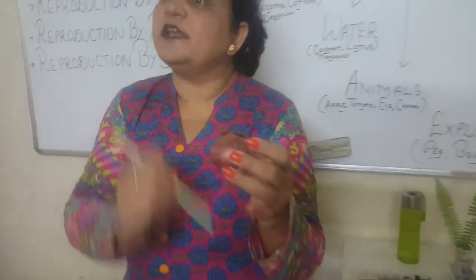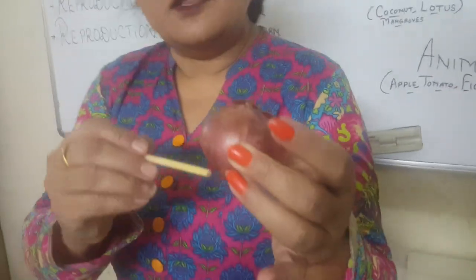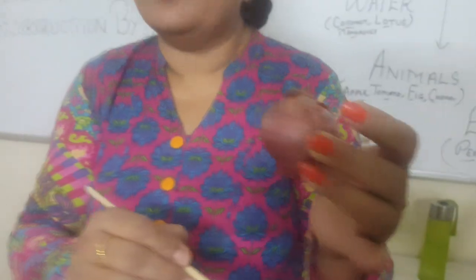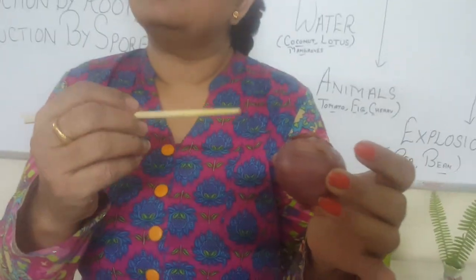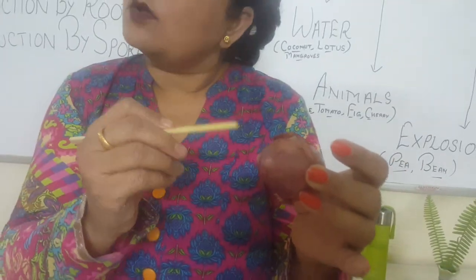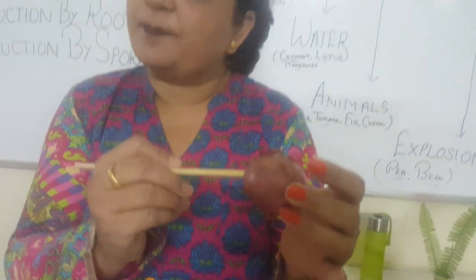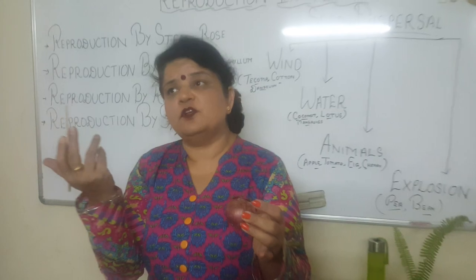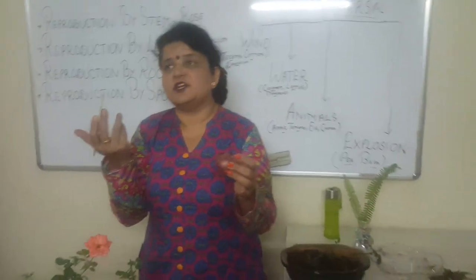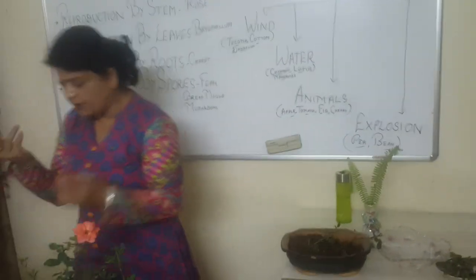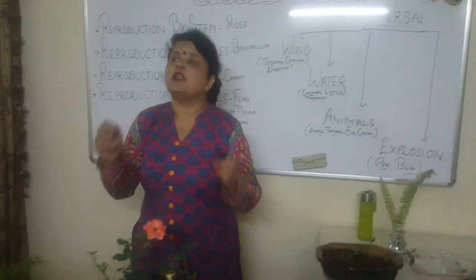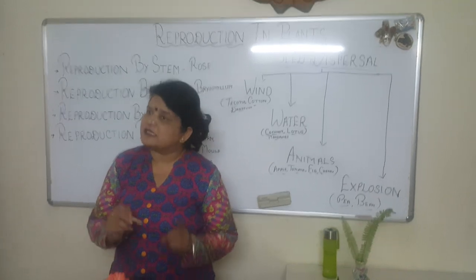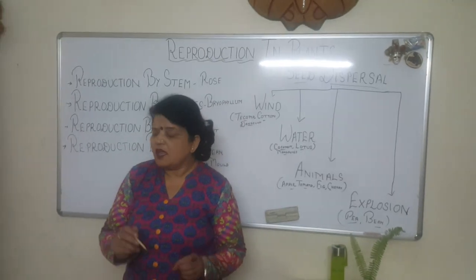The same is done with onion. If you put an onion in water, several roots will arise from it. An onion is also the stem of a plant, and you'll find the root and shoot growing out of it. This is all about reproduction by stem cutting.